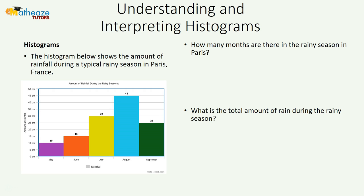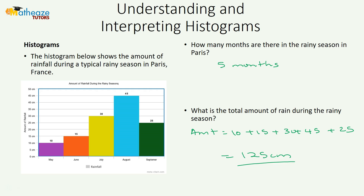How many months are there in the raining season in Paris? We can just see from the bars — we have 5 months. And then, what is the total amount of rain during the raining season? We just add up the bars: 10 plus 15 plus 30 plus 45 plus 25, which gives us 125 centimeters. That's how much rainfall we had during the raining season for this period.